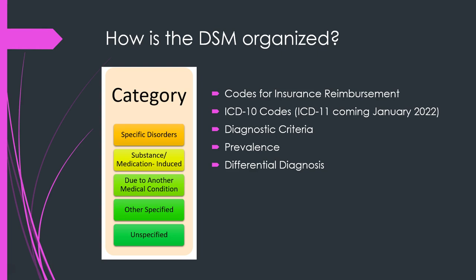How is the DSM organized? Each section has several categories, and within each category of disorders there are specific disorders, as well as the substance- or medication-induced version of that issue, the issue due to another medical condition, and something that's 'other specified' or 'unspecified.' You'll also see codes used for reimbursement, as well as ICD codes — International Classification of Diseases — used in other countries. We're currently on ICD-10. There's also diagnostic criteria, prevalence information, and differential diagnosis sections.